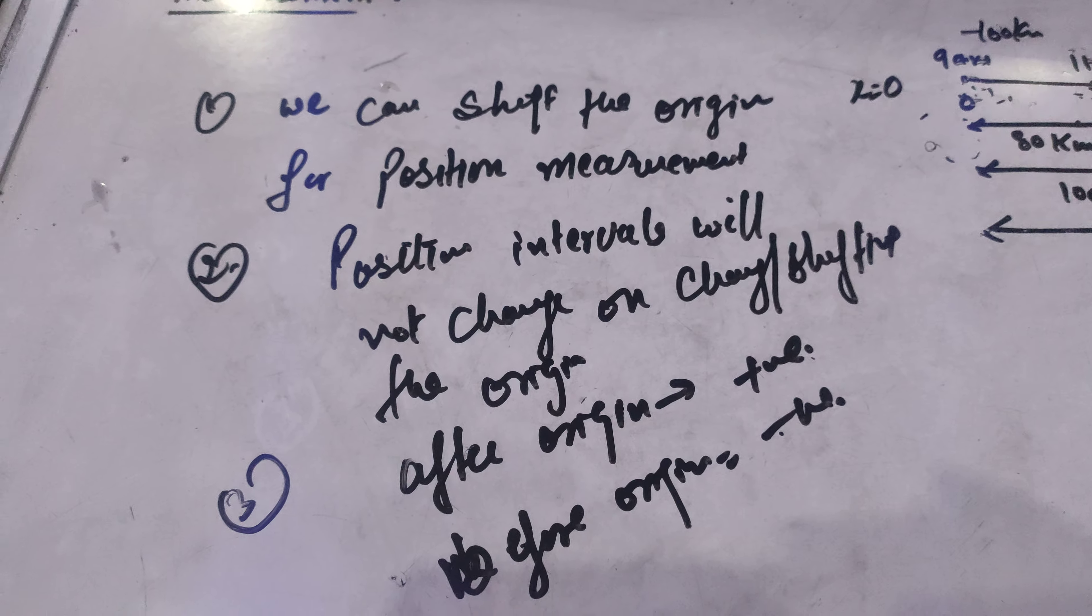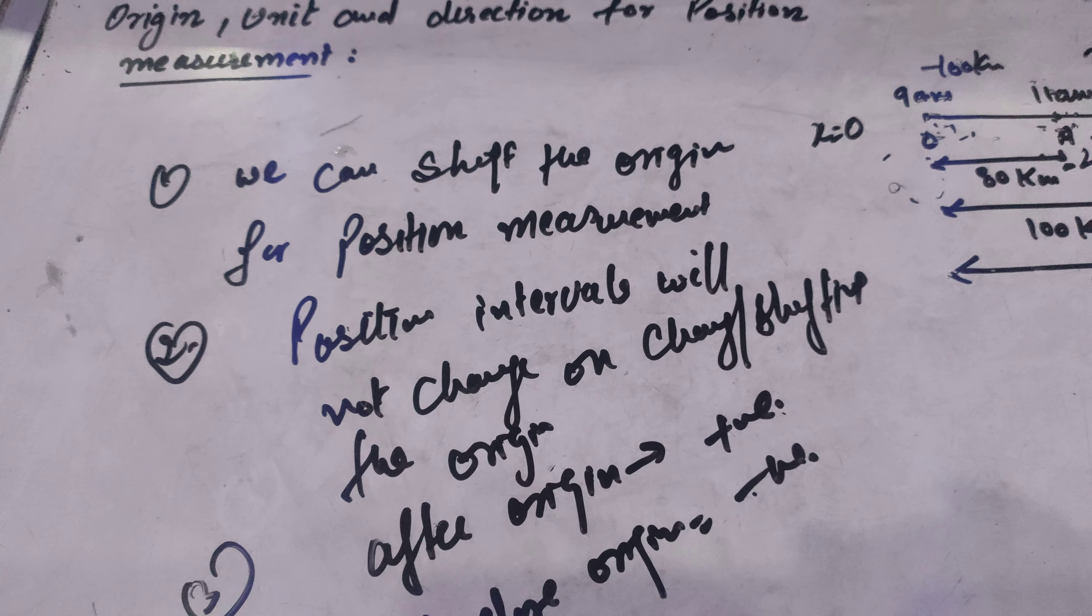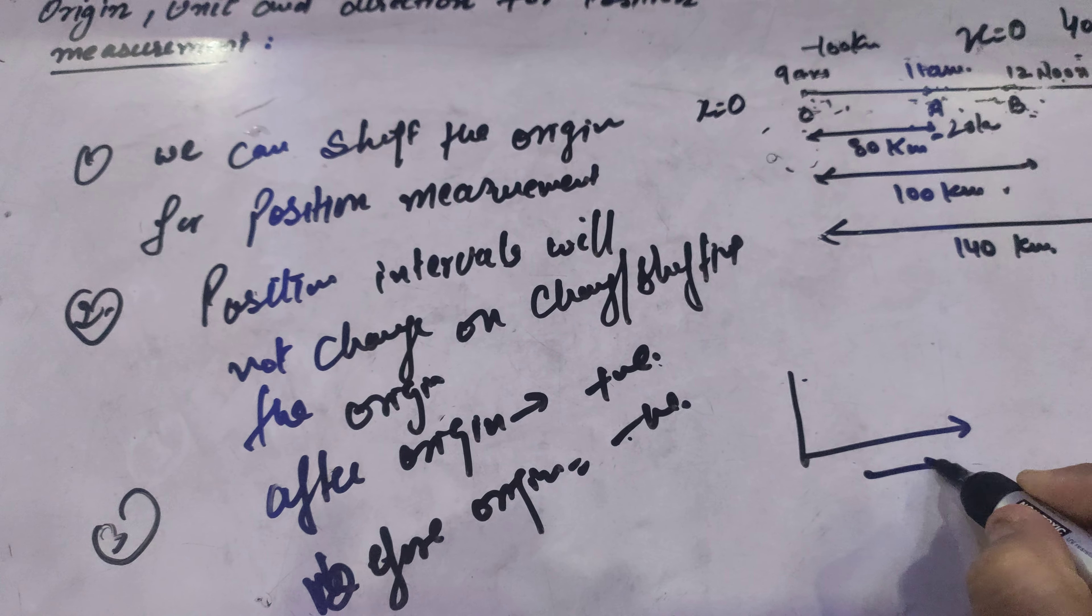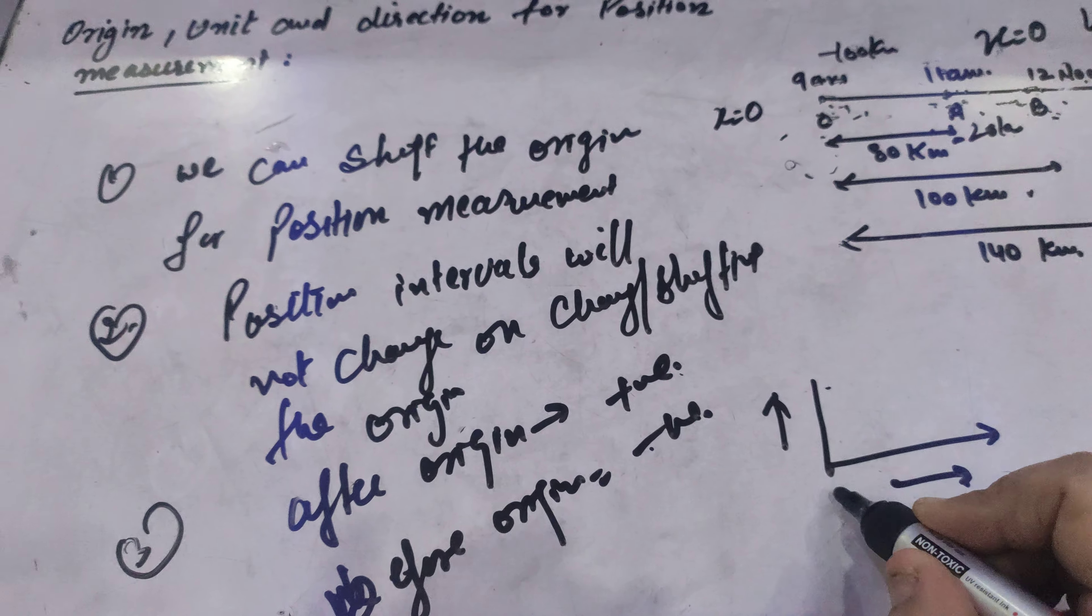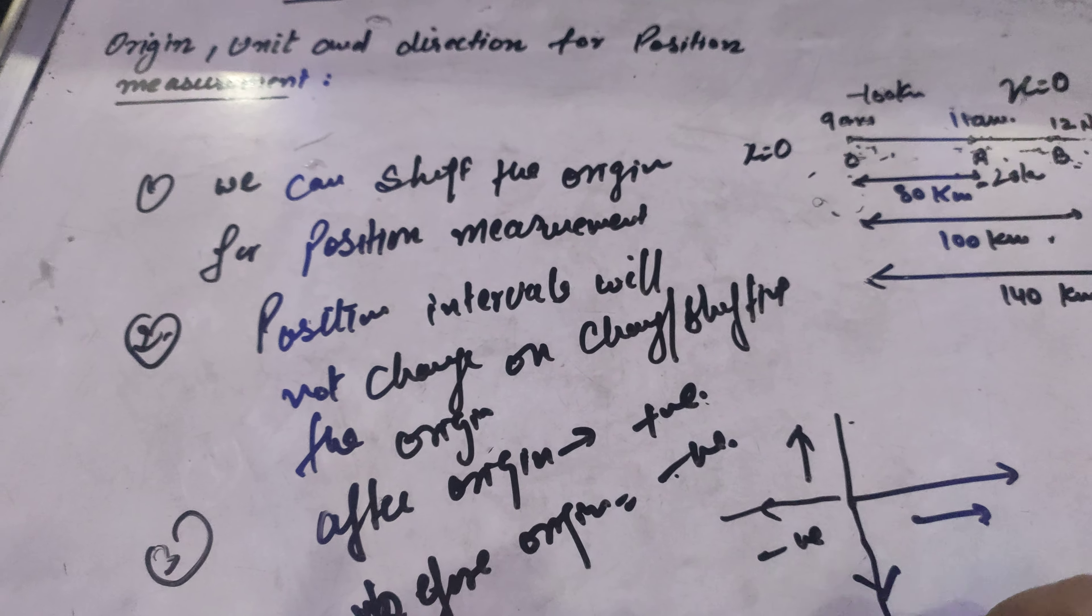Now if we are talking about the origin and if we are taking origin on the x, y coordinate axis, in this case these axes are taken to be positive. And if we are talking about this side, these are taken to be negative.